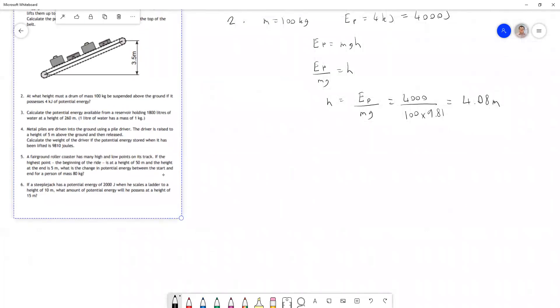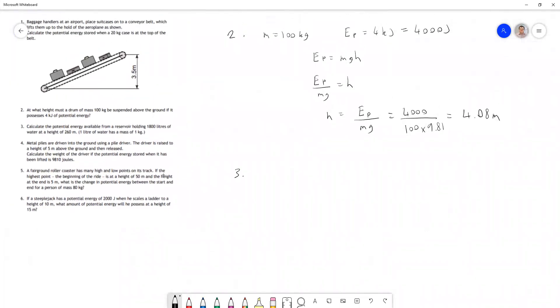Question three asks us to calculate the potential energy available from a reservoir holding 1800 litres of water at a height of 260 meters. The question should explain that one litre of water is the same as one kilogram of water. So we can think of this as 1800 kilograms of water. That's only true for water; any other liquid does not generally have the same density.